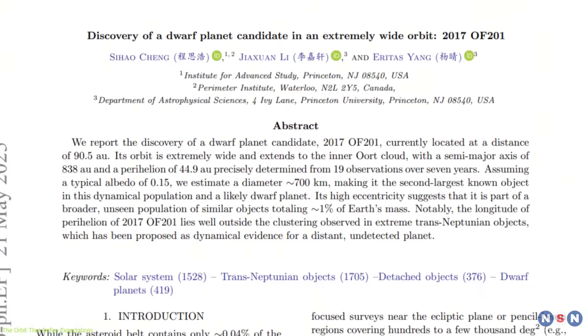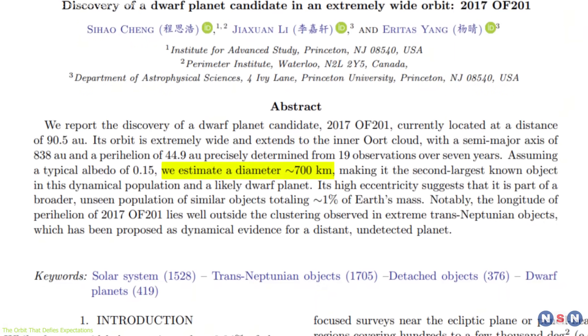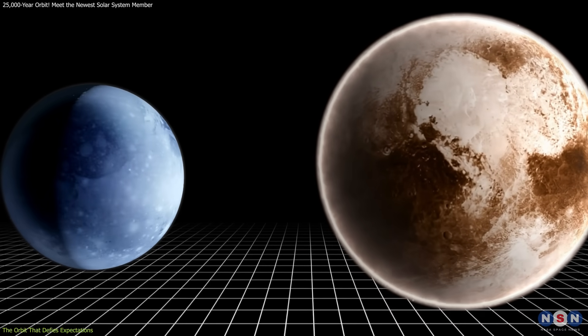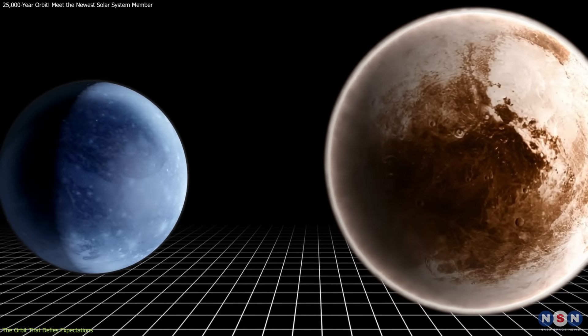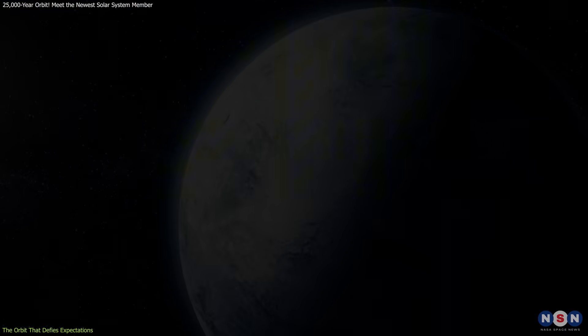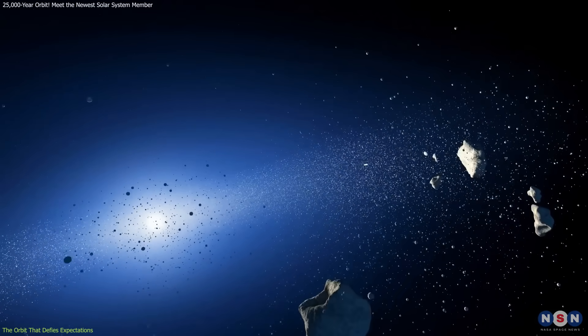In terms of size, this TNO is estimated to be about 700 kilometers in diameter. That's roughly a third the size of Pluto, placing it well within the range to be considered a dwarf planet. Its spherical shape and probable icy rock composition make it comparable to other distant bodies that the IAU has classified as such.